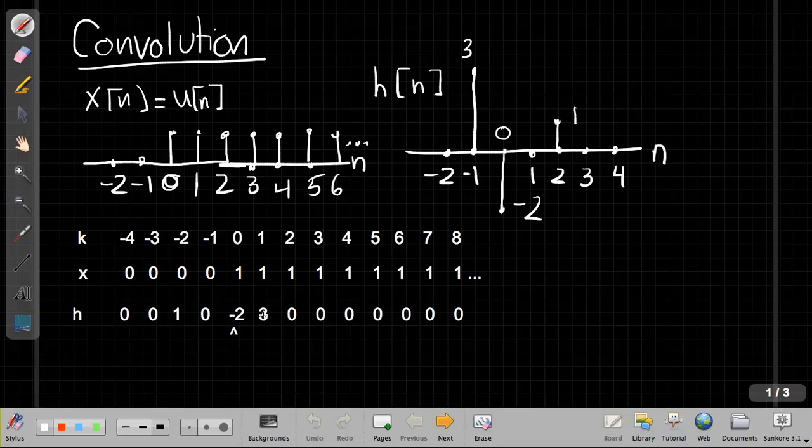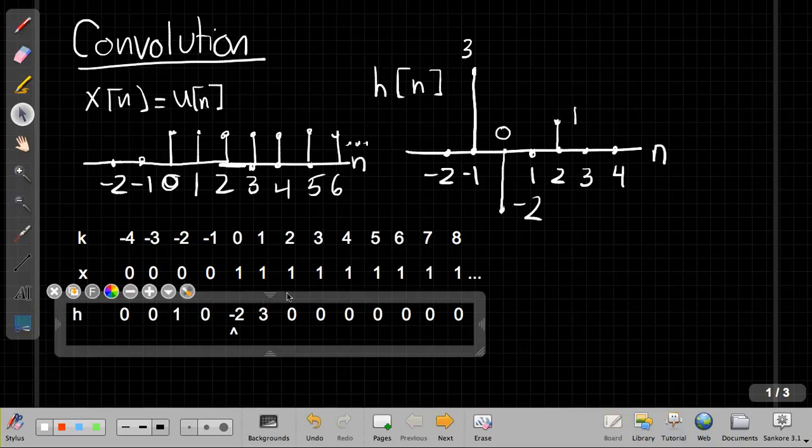And I can sort of look at this and see, well, although I've got this lined up to compute the output at time equals 0, right? The output is under k equals 0 here, so this would find y at time 0. I've got a problem that I've already started overlapping, so I really, if I want to find the first non-zero point, I actually need to, after I've flipped my ticker tape, back it up until I just get things to start overlapping.